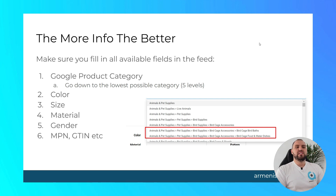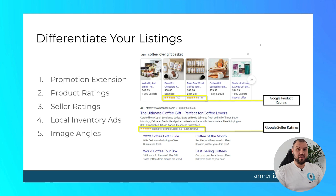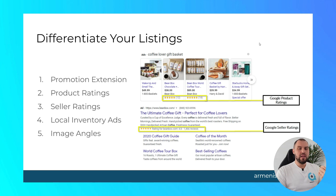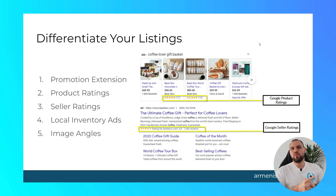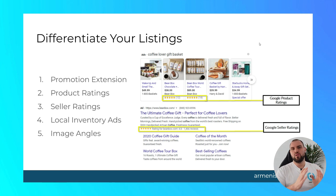The more info you can give Google, the better. Make sure you fill in all the available fields — the category, color, size, material, gender, any information you have. And try to differentiate your listings: use promotion extensions if you're running promotions, they make listings pop. You can have product ratings, seller ratings, local inventory ads, different image angles, bundles. Whatever you can do to make your listings stand out is time well spent. This is where you should be spending your time — the time in the ads manager side is minimal compared to this. It's an ongoing process: try one thing, see if it works, try another. At the very start, you want things set up properly and to the best of your ability.